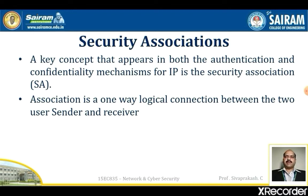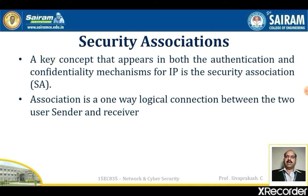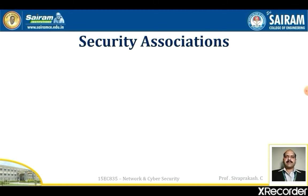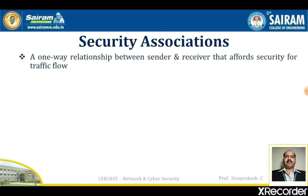A key concept that appears in both the authentication and confidentiality mechanisms for IP is the security association. An association is a one-way logical connection between a sender and a receiver that affords security services to the traffic carried on it. If a peer relationship is needed for two-way secure exchange, then two security associations are required. A security association is uniquely identified by three parameters.